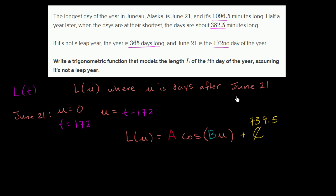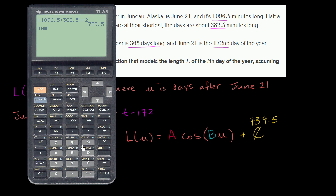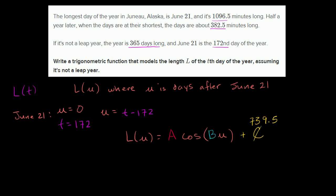Now the amplitude is how much we vary from that midline. We could take 1096 minus this, or we could take this minus 382.5. Let's take 1096.5 minus 739.5, and we get 357. So this is how much we vary from that midline. A is equal to 357.